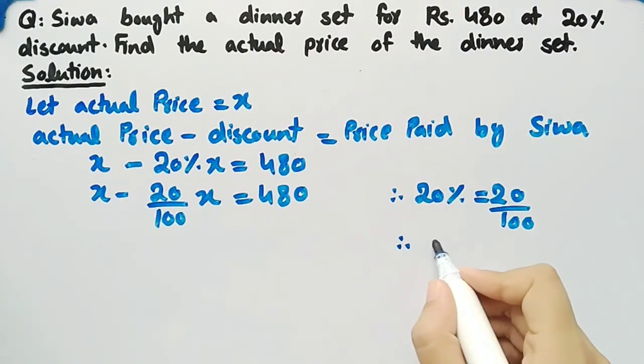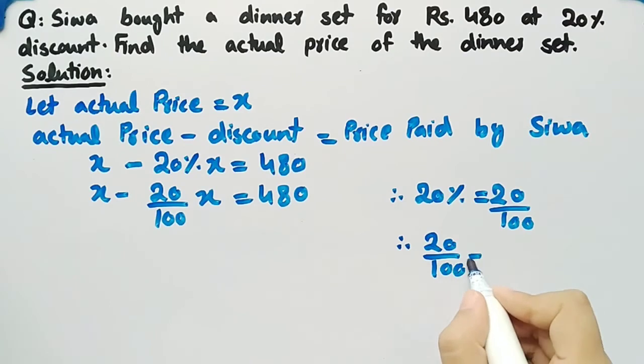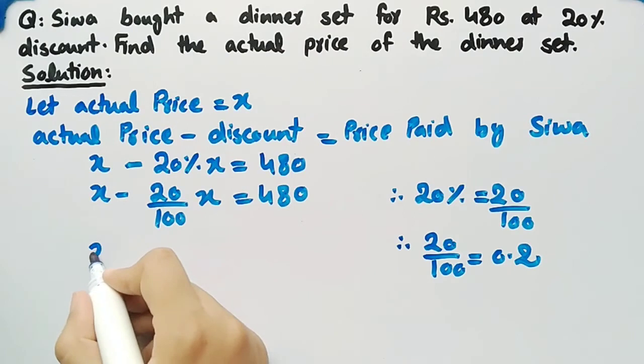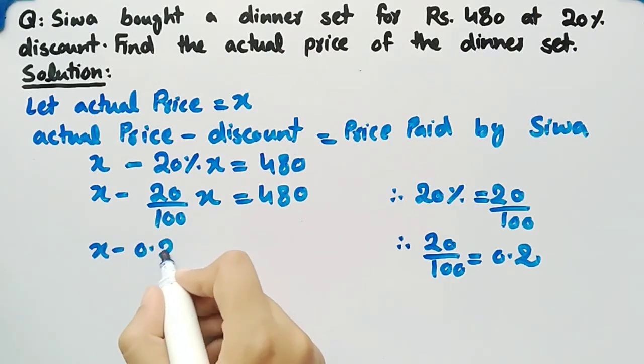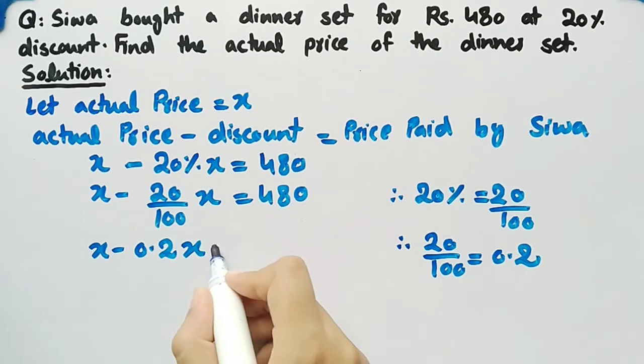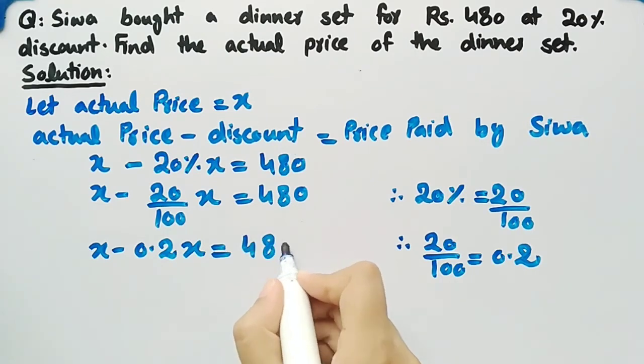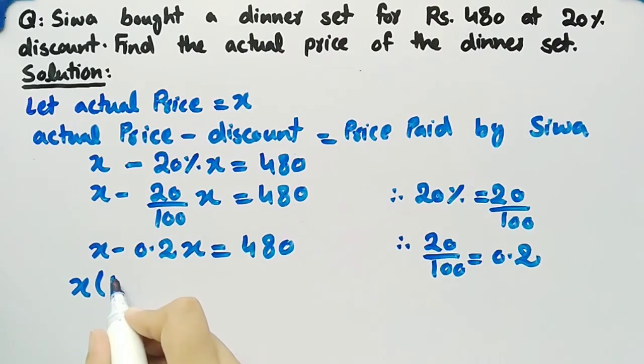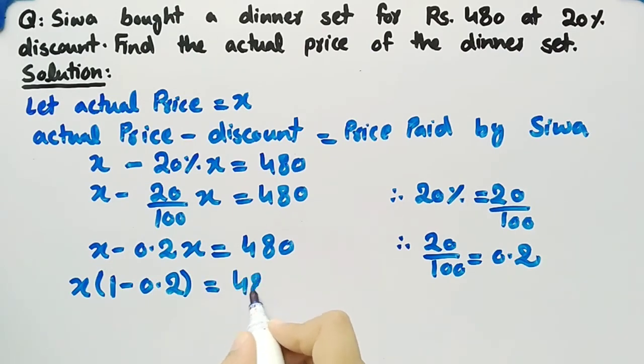20 divided by 100 is equal to 0.2. So we can write it as X minus 0.2 times X equal to 480. If we take X common, we are left with 1 minus 0.2 in brackets times X equal to 480. 1 minus 0.2 is equal to 0.8, so we get 0.8 times X equal to 480.